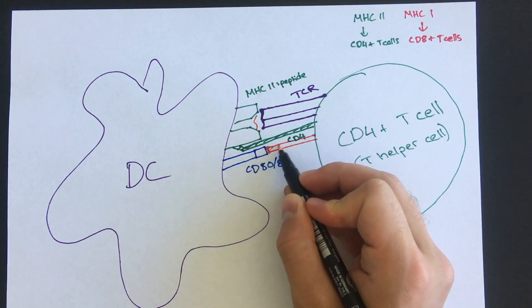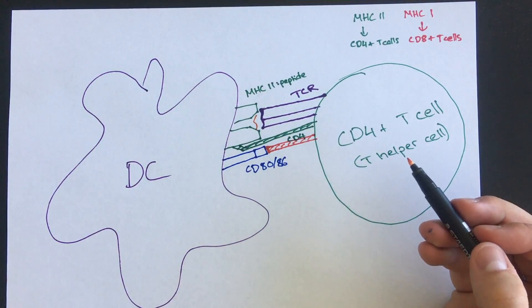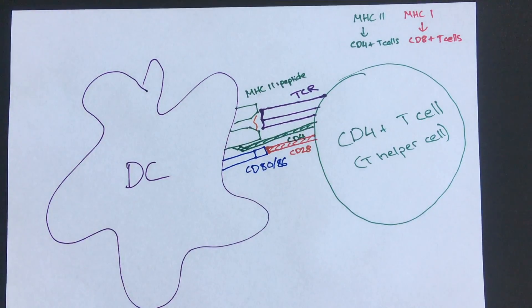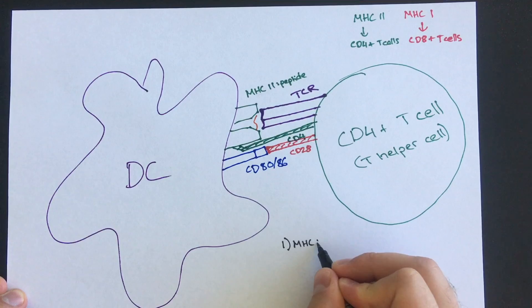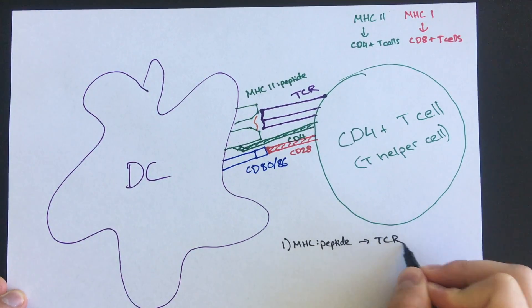The important second signal is co-stimulation, which is mediated by CD80/86 on dendritic cells, which binds CD28 on T cells. This acts as a safety check for the immune system. If the dendritic cell does not express this molecule as a result of infection, the T cell won't be activated by the MHC molecule with peptide alone. So we have signal 1, which is the MHC-peptide combination ligating the specific T cell receptor, and signal 2, which is CD80/86 on dendritic cells binding CD28 on T cells to provide co-stimulation.